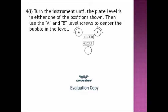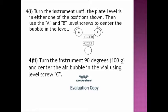Fourth, we turn the instrument to the plate level. It is either one of the positions shown. Then use the A and B level screws to center the bubble in the level. Then we turn the instrument 90 degrees and center the air bubble in the vial using level screw C.